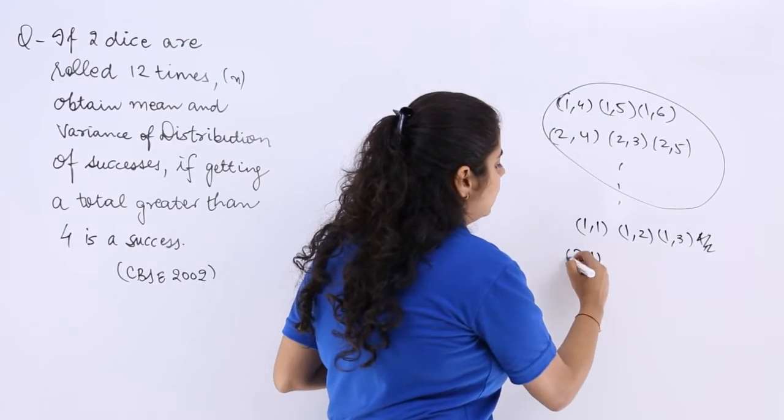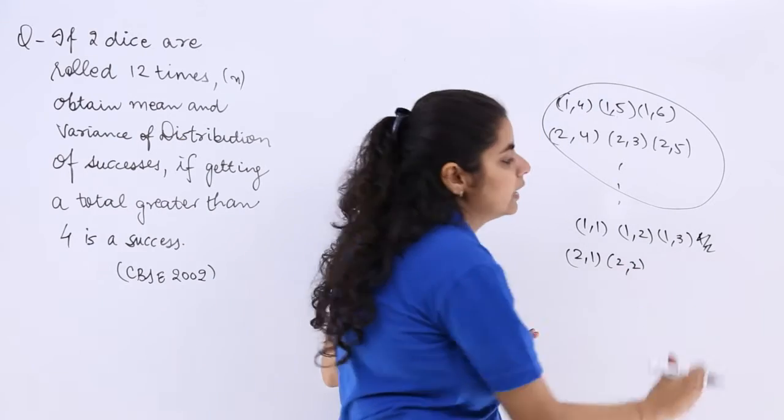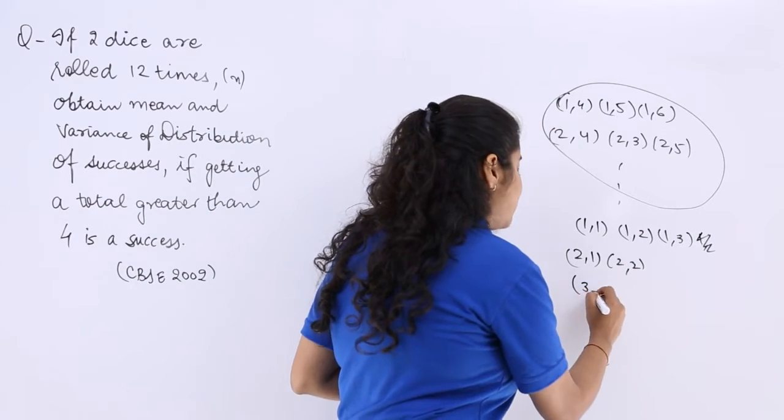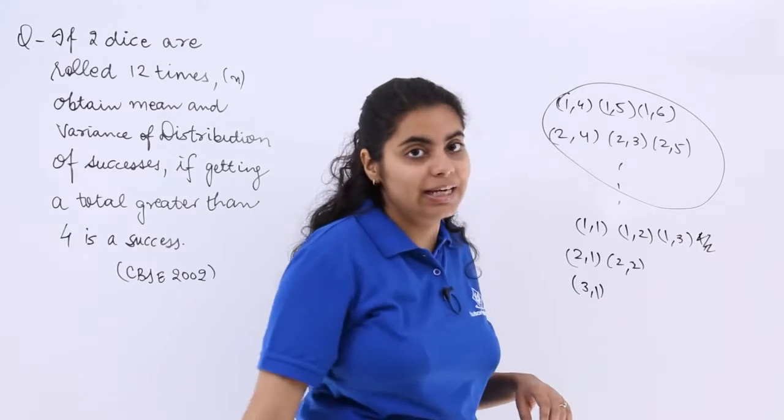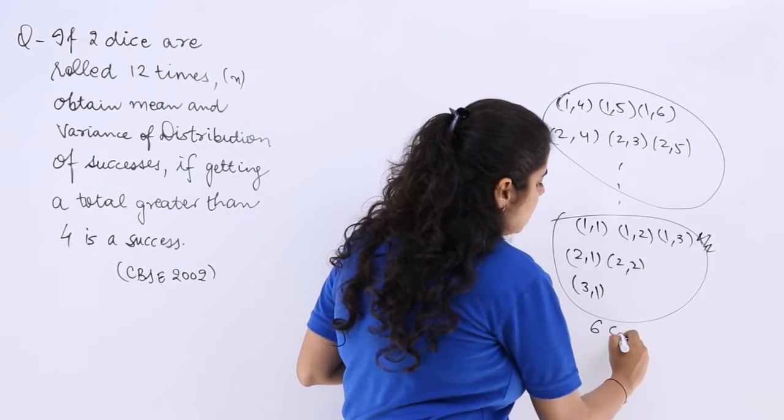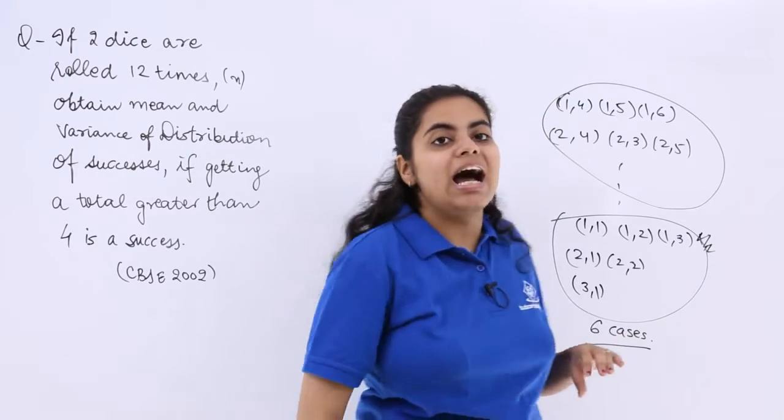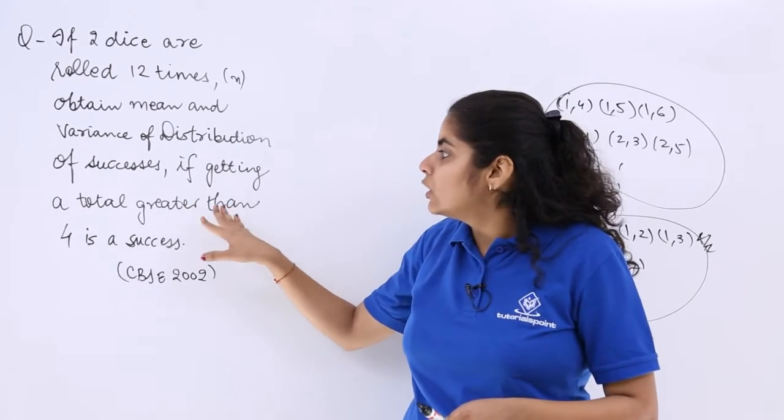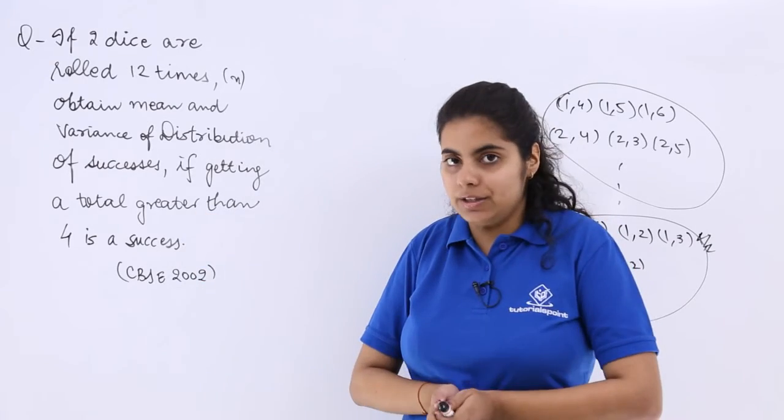Similarly (2,1), (2,2) is fine with us but after that it will be greater than 4. So these are in all how many cases? 6 cases are there wherein I see that the total is not greater than 4.